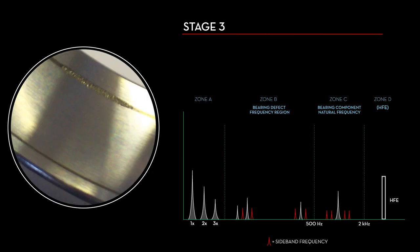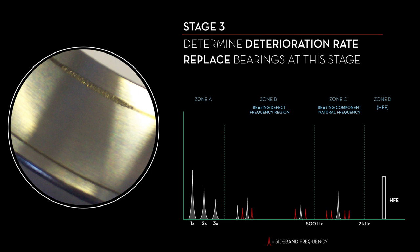If the bearing is removed, defects can be clearly seen in the raceways. A deterioration rate should be determined. Bearings at this stage should be replaced in critical and non-critical machinery.